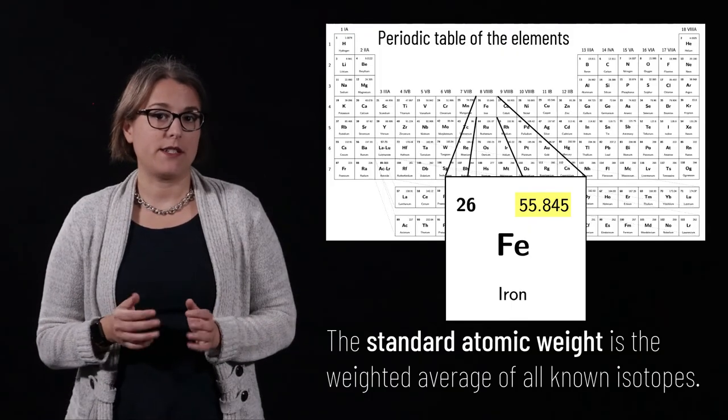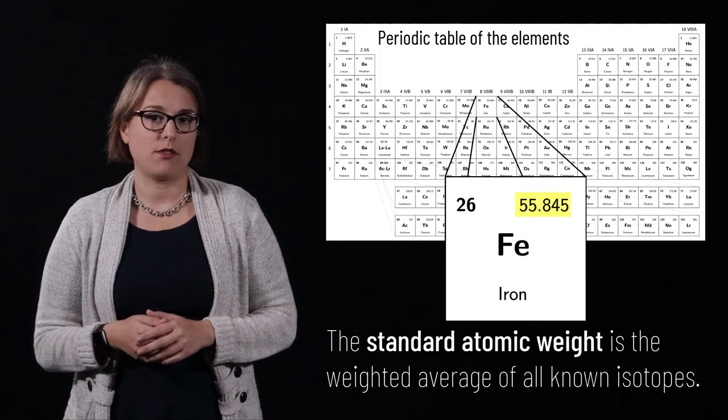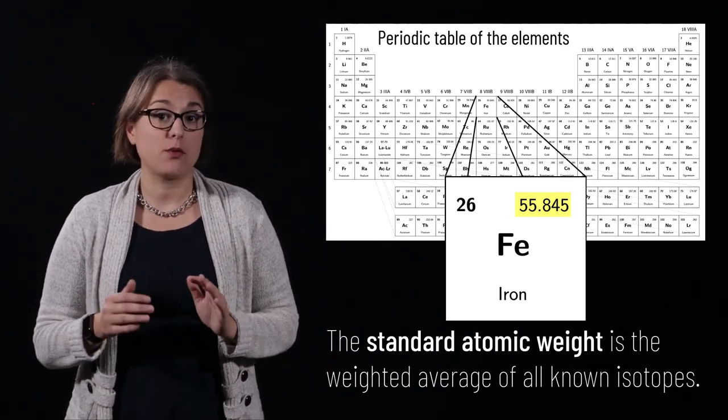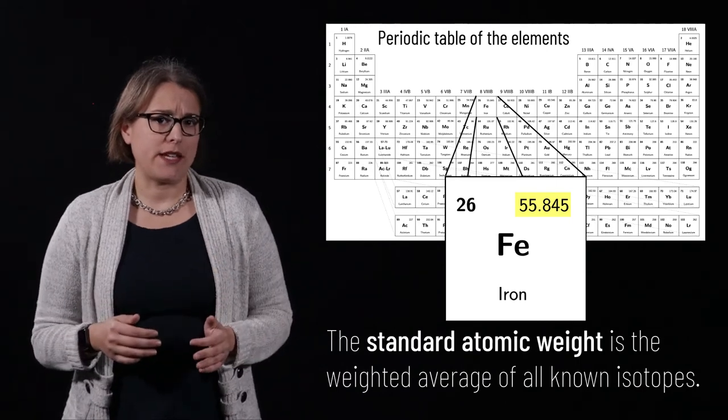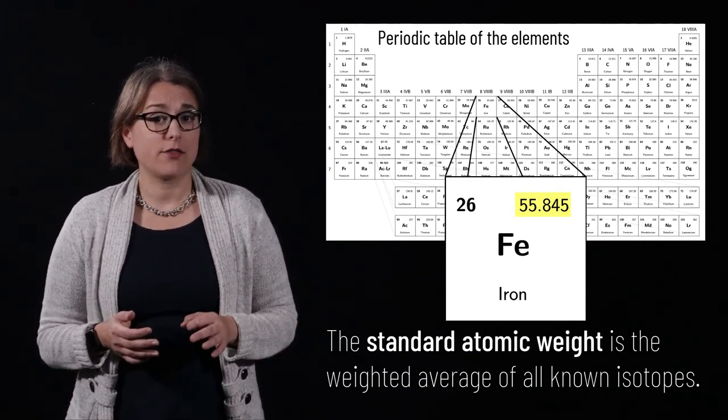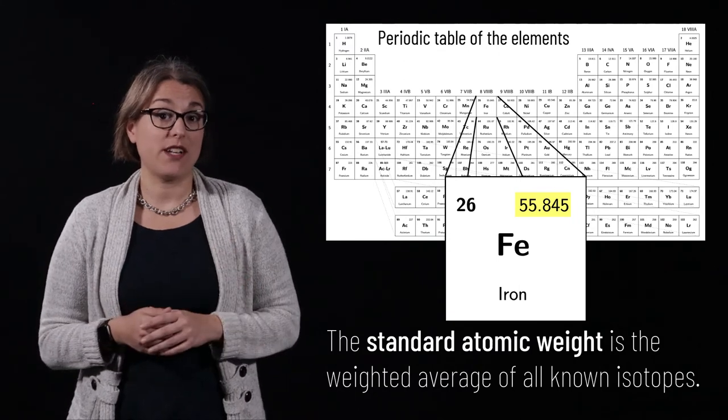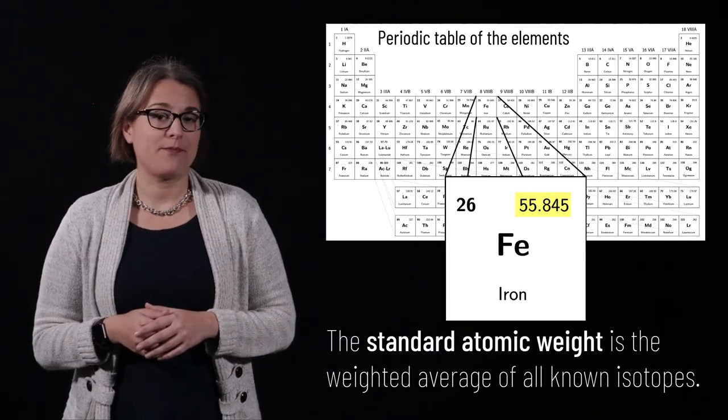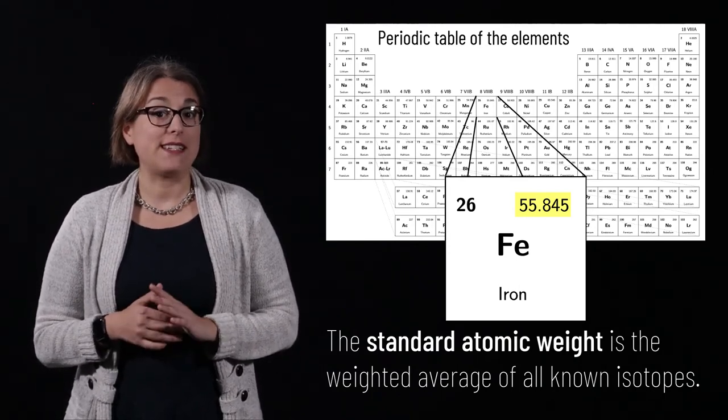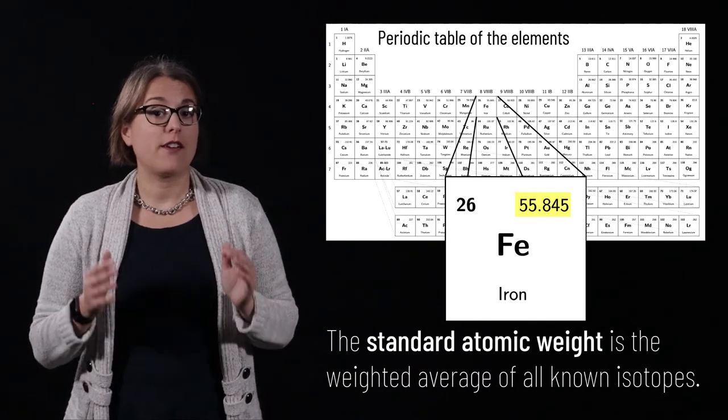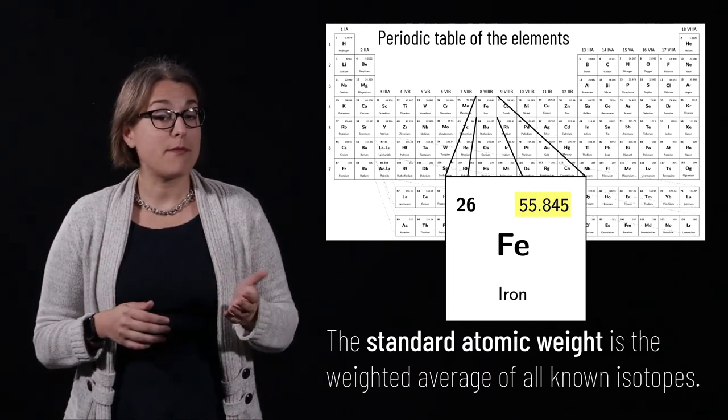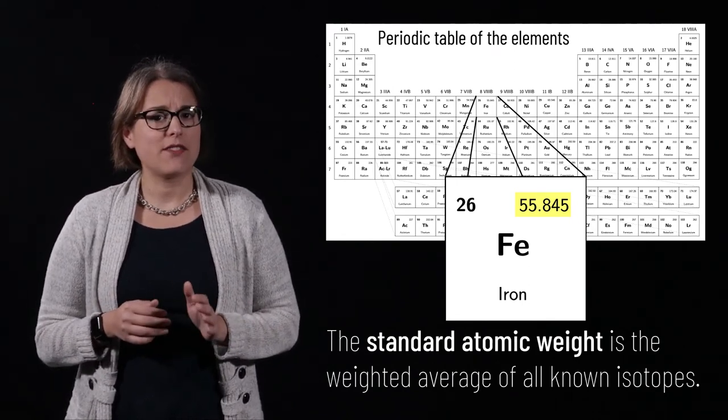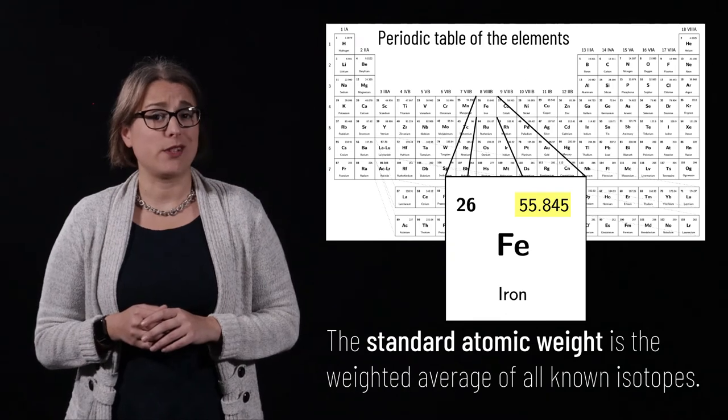The standard atomic weight of an element is also given on the periodic table. The standard atomic weight is the weighted average of the mass of all known isotopes of the element. This just means that the standard atomic weight takes into consideration the different isotopes of an element that exist, and the probability of finding each one of those isotopes. The standard atomic weight is equal to the sum for all isotopes of the abundance of that isotope times the mass of that isotope. This explains why the standard atomic weight given on the periodic table is usually not a whole number.